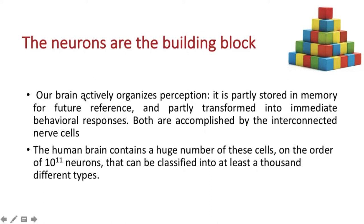Now that we know there are sensory neurons, motor neurons, and interneurons, we would like to see what is common in all these neurons. Neurons are the building block, and our brain organizes all perceptions — whether storing in memory or producing immediate behavioral responses — and these are accomplished by the neurons themselves. There are a very large number of neurons in our brain, in the range of about 10 to the power 11 neurons. These are huge, mind-boggling numbers, and they are of different types — at least a thousand different types of neurons are found in the brain itself.